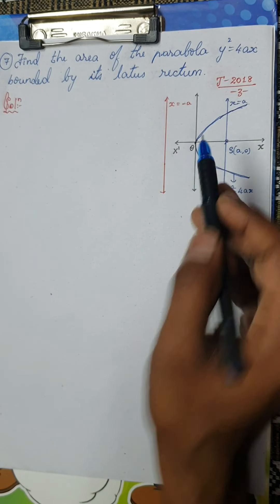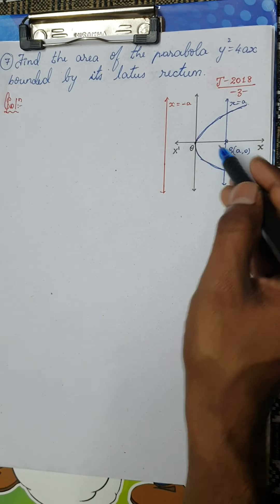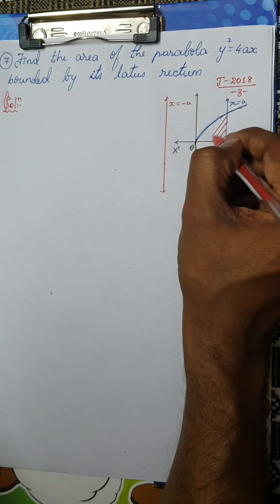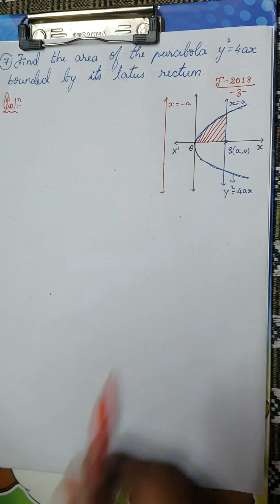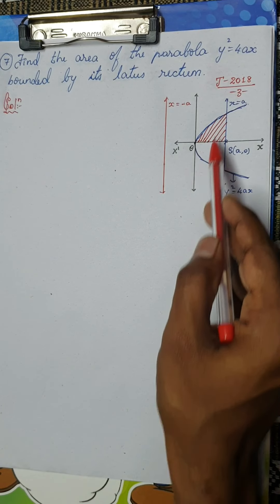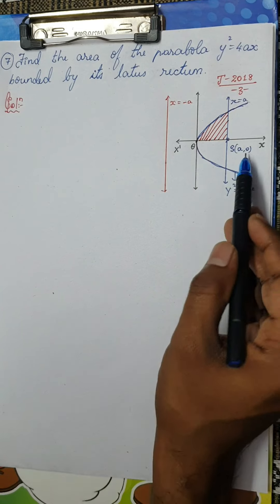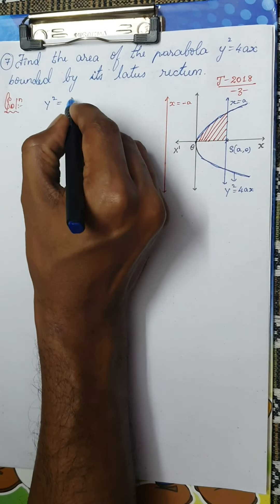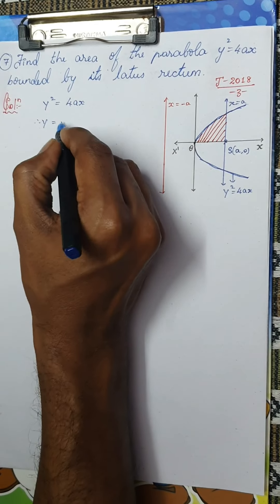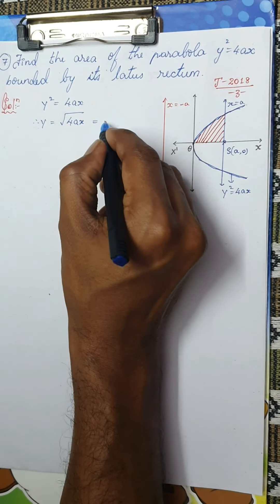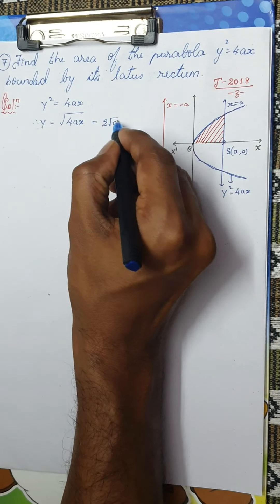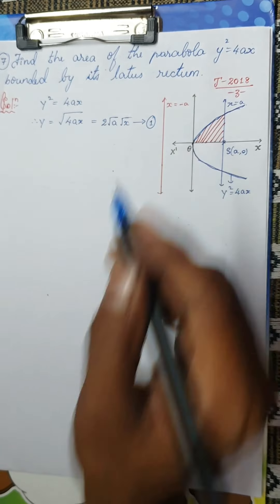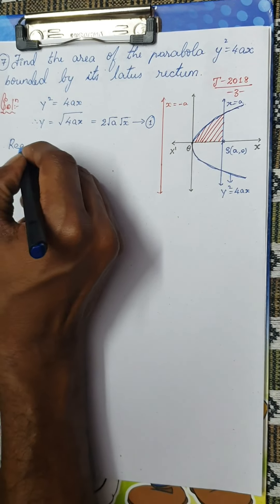Now I want the area enclosed — bounded by this parabola and this latus rectum. As we see, we will be having two symmetric areas. Because the parabola is symmetrical about its axis, I am going to take one shaded region and multiply by two. Two times the shaded region will give me the total region. The curve is facing right, so I need ∫y dx. From y² = 4ax, y = √(4ax) = 2√a · √x. Let me take this as equation 1.